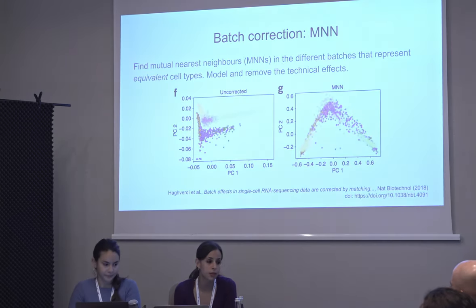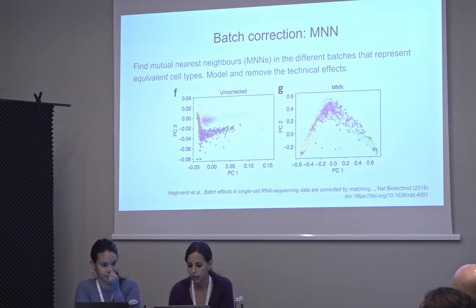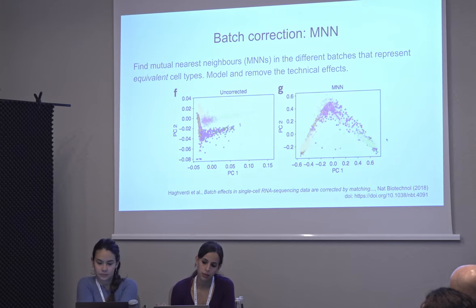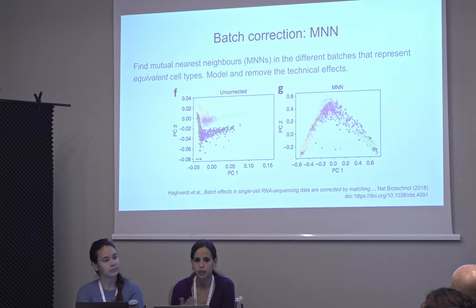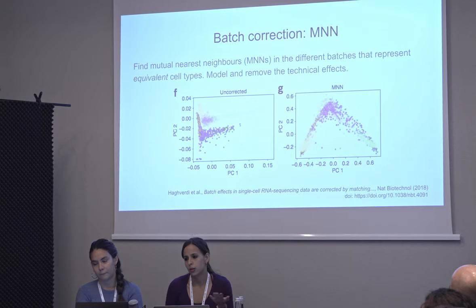Applying this method to those two datasets, you can see that now they are clustering by cell type and not so much by technology — this is very useful for combining different datasets. We are now at a point where there are many published datasets, and sometimes you might want to compare your data to other available data, so these methods become really useful.